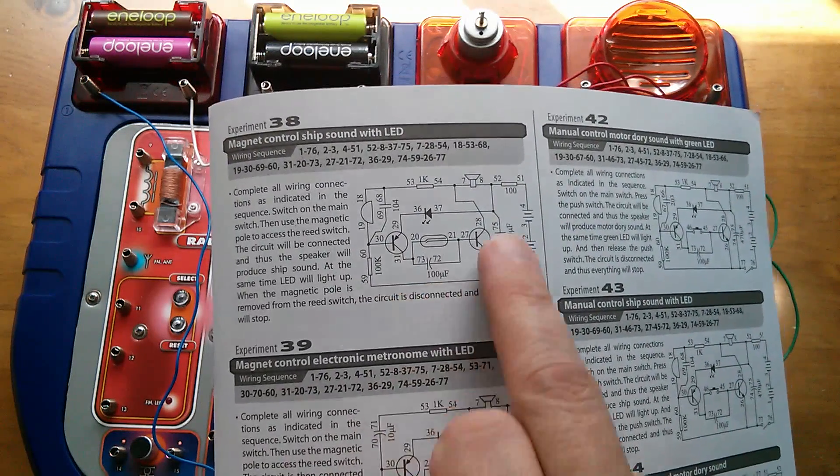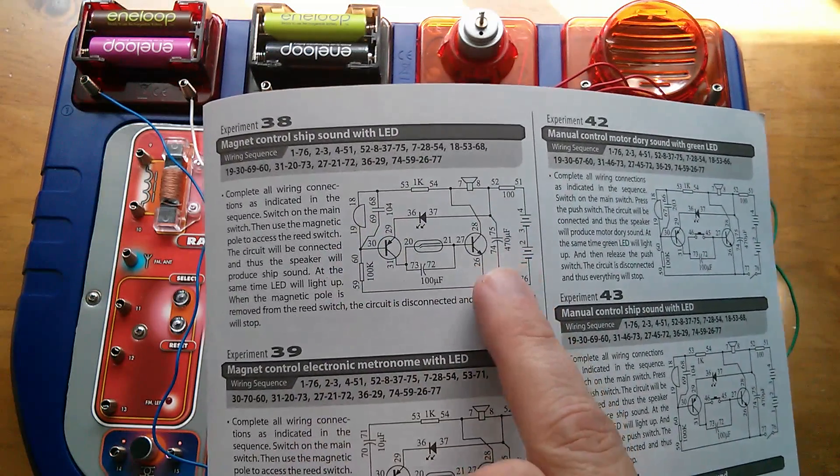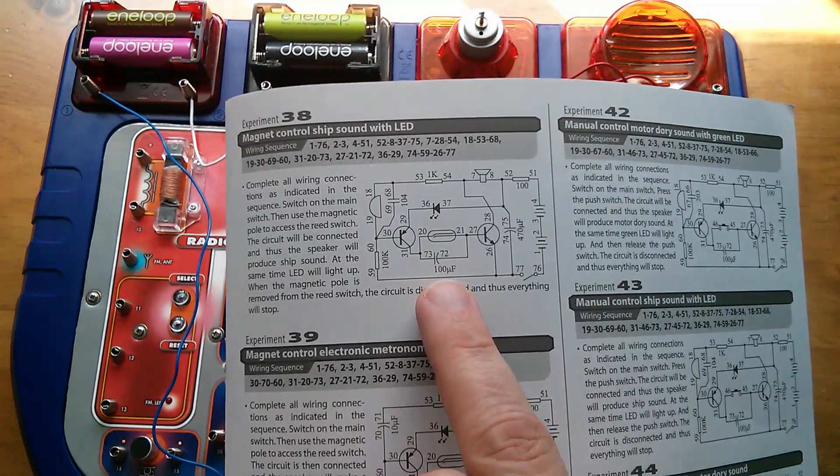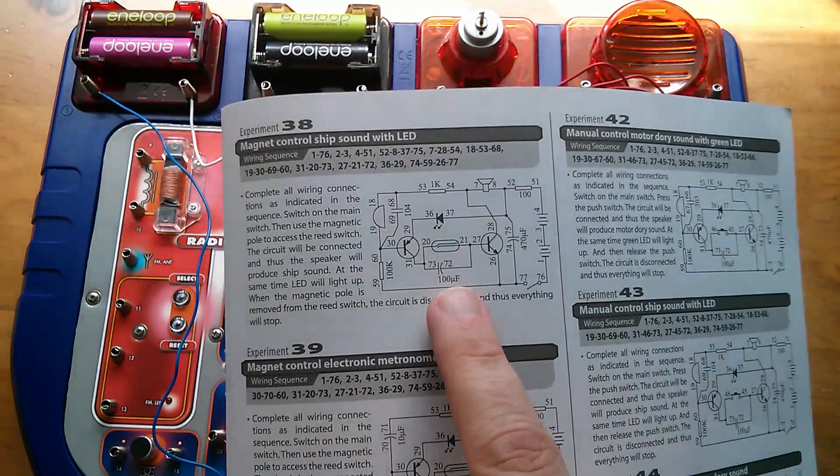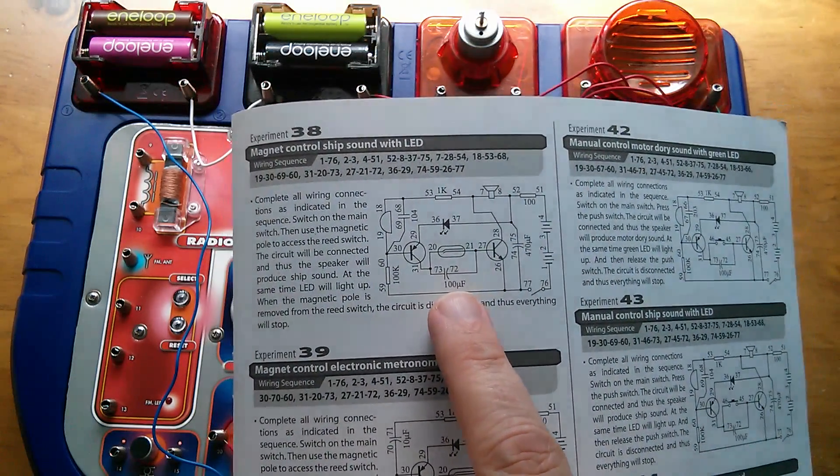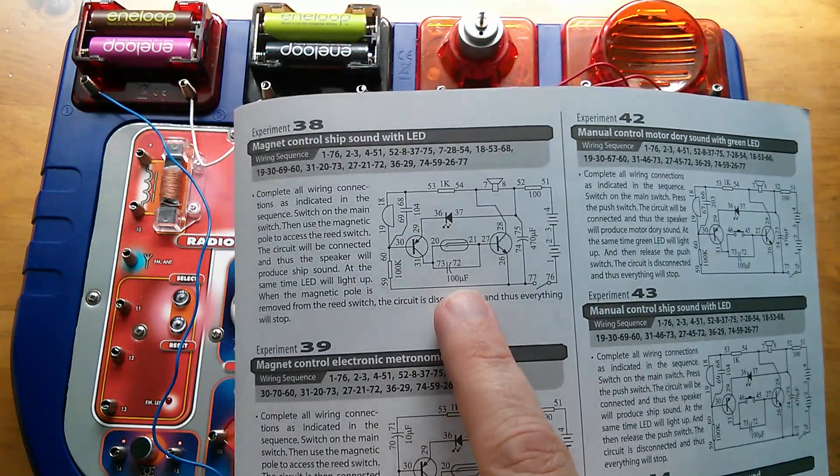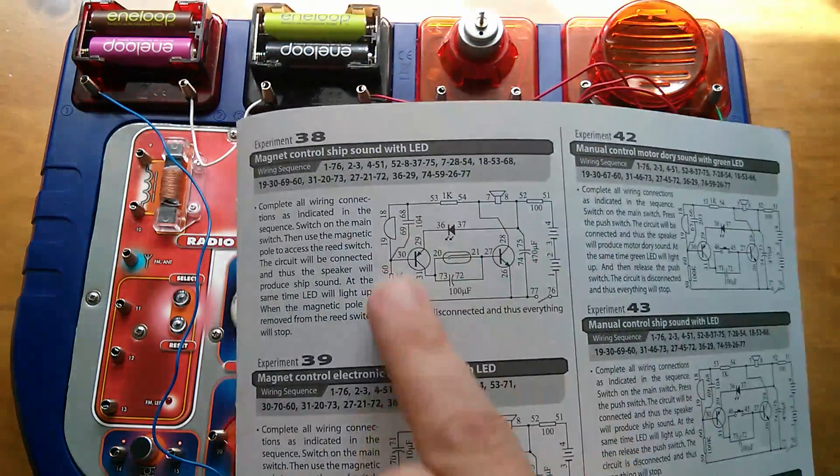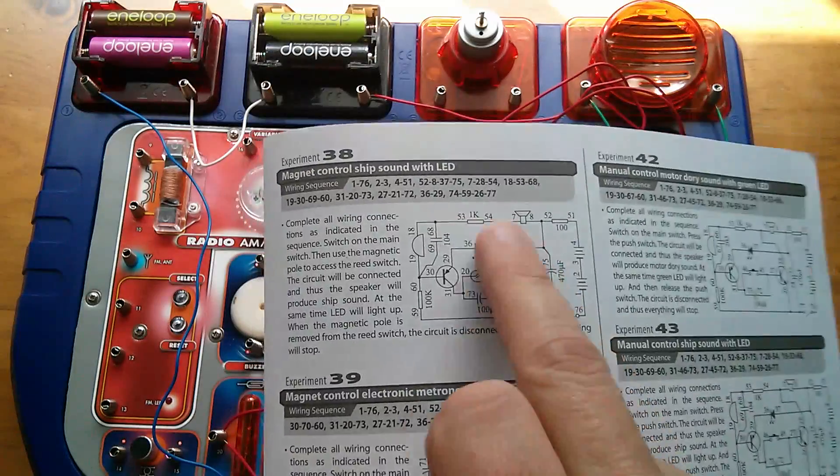Now, I don't quite know whether this capacitor is actually in the oscillator feedback loop. I wouldn't have thought so at 100 microfarads. But as that voltage rises up, it changes the frequency of this oscillator, and then at a certain point, the oscillator stops oscillating altogether. It's quite a clever circuit.